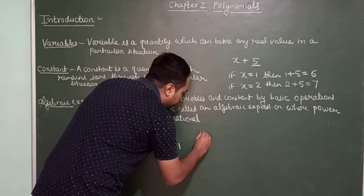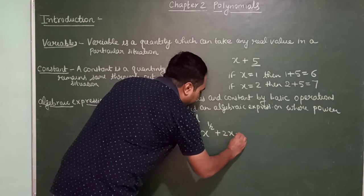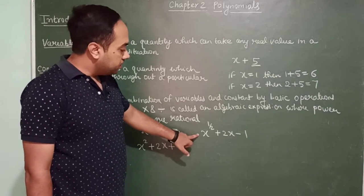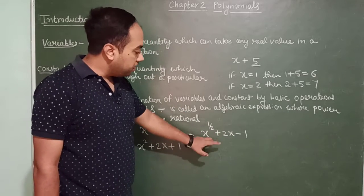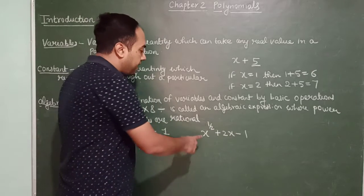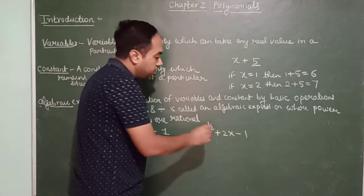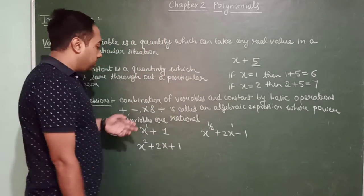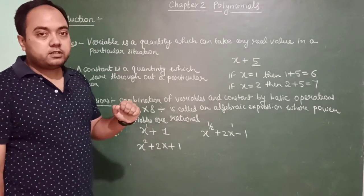One more example: x raised to the power one-half plus 2x minus 1. Is this an algebraic expression? Yes — variables and constants are combined using plus and minus, the power of x here is one-half which is rational, and the power of x in 2x is 1 which is also rational. So all three are examples of algebraic expressions.